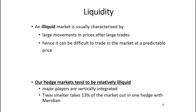Most importantly, individual trades must not significantly affect the forward curve or the price of immediately subsequent trades. Conversely, an illiquid market is characterized by large movements in prices after large trades, making it difficult to trade at a predictable price. Unfortunately, our hedge markets do tend to be relatively illiquid compared to larger financial hedging markets. This occurs for two main reasons: first, the big players are primarily vertically integrated — the market as a whole is vertically integrated to around 80 percent; and second, the Tiwai smelter, the largest single load at about 13 percent of the market, is wrapped up in one hedge contract with Meridian Energy and is not typically in the market looking for hedges.